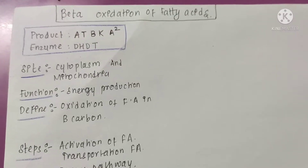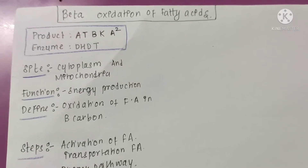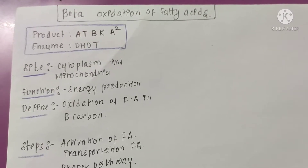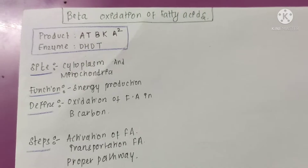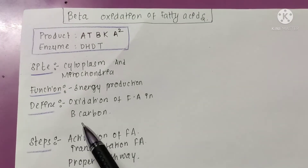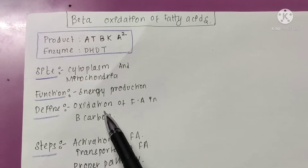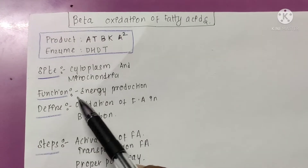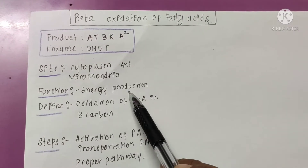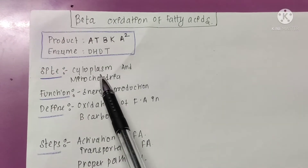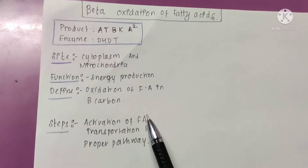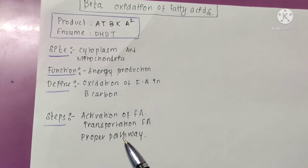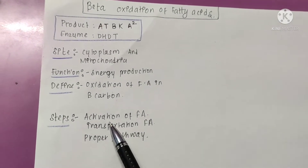Hello everyone, today we will study the beta oxidation of the fatty acid in a very easy way. From the definition, beta oxidation is the oxidation of the fatty acid at the beta carbon. Its function is energy production, and the site is the cytoplasm and mitochondria.